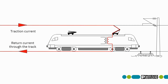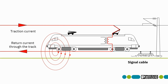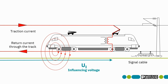In electric traction, the current flows through the overhead line to the traction unit and through the track, and partly back to the earth. This creates a magnetic field. Signal and telecommunication cables are laid next to the track, and the influence voltage is induced in these cables.